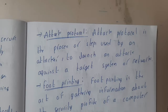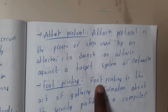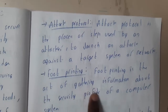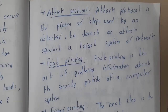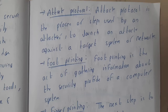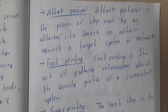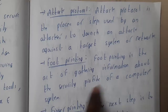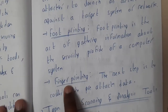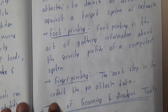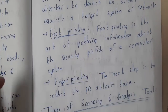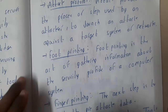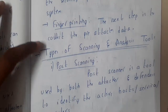The second concept is footprints. Footprint is the act of gathering information about the security profile of a complete system — identifying the system's status and what is happening in the system. The next concept is fingerprinting, which involves collecting pre-attacker data — basically anticipating what kind of attack could happen. These concepts are foundational, but the most important focus here will be on the tools.